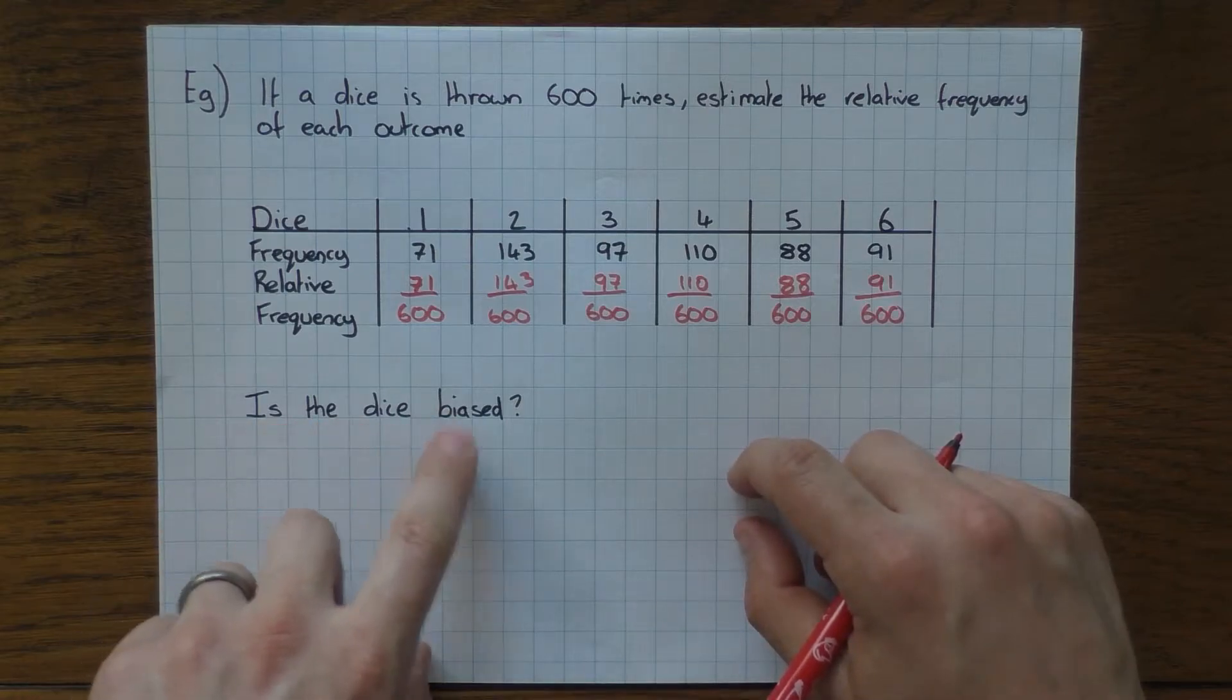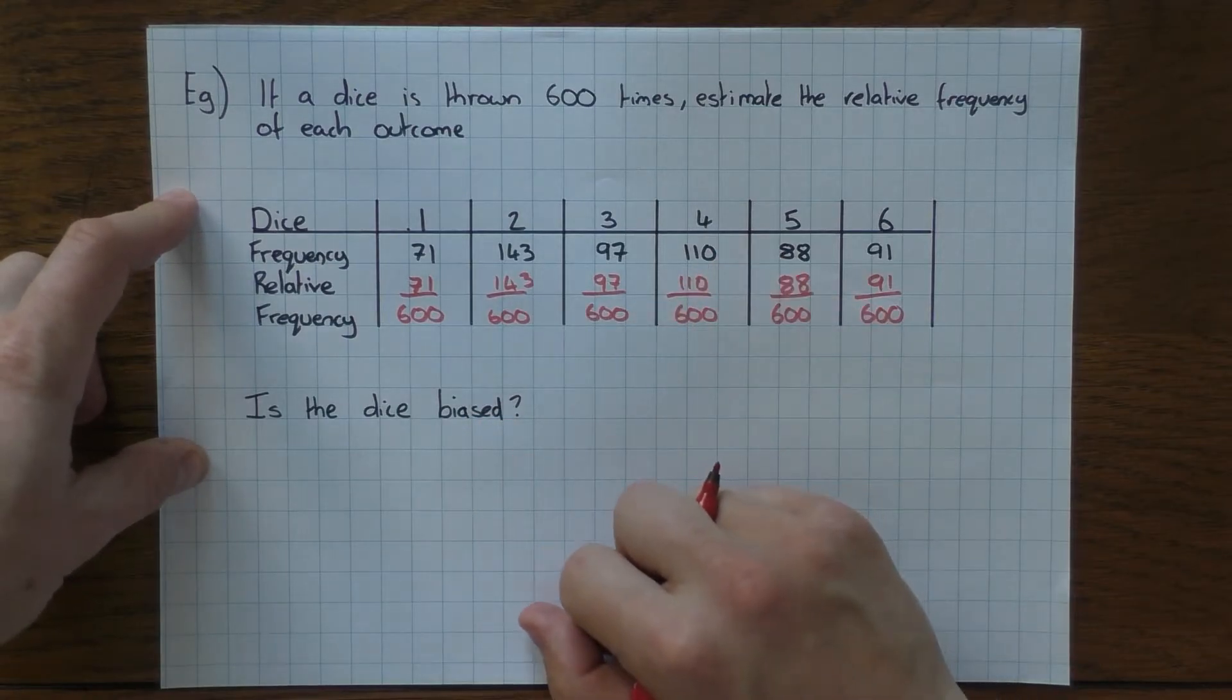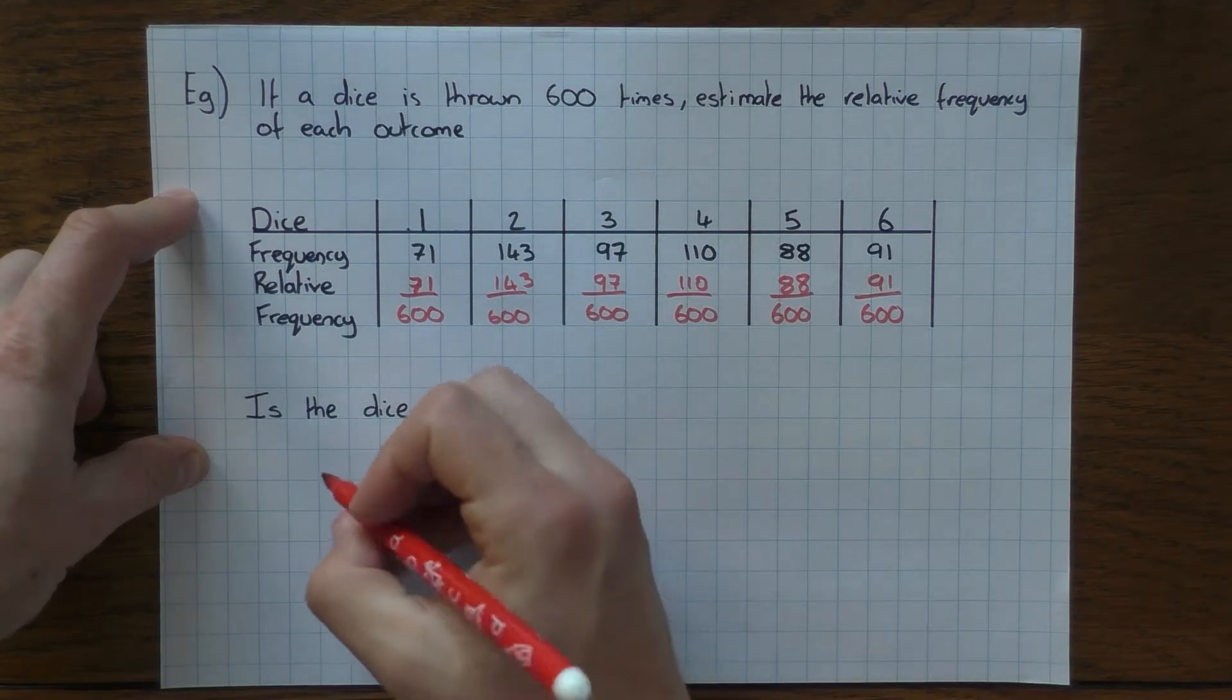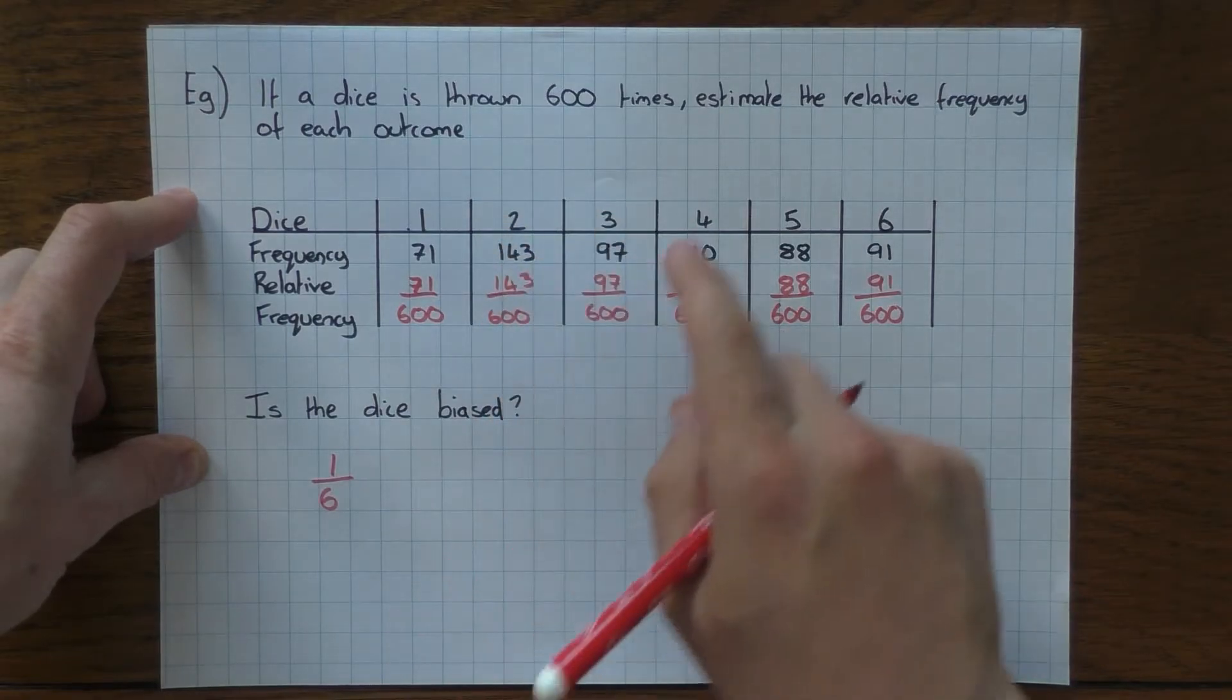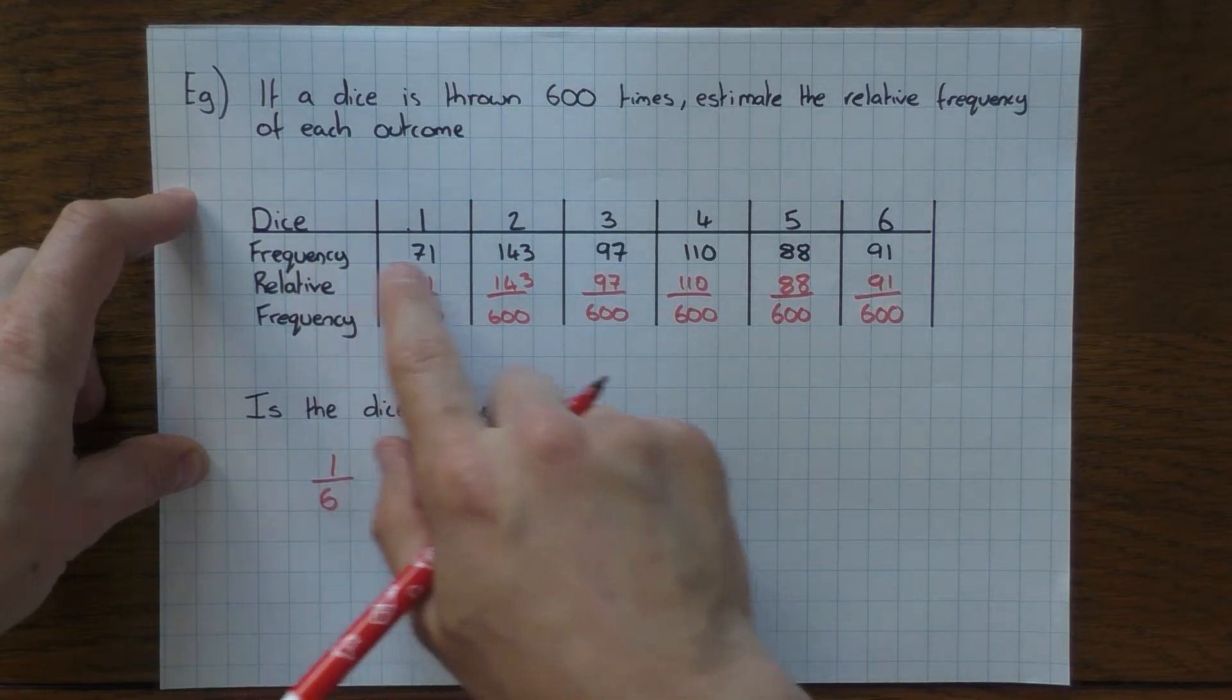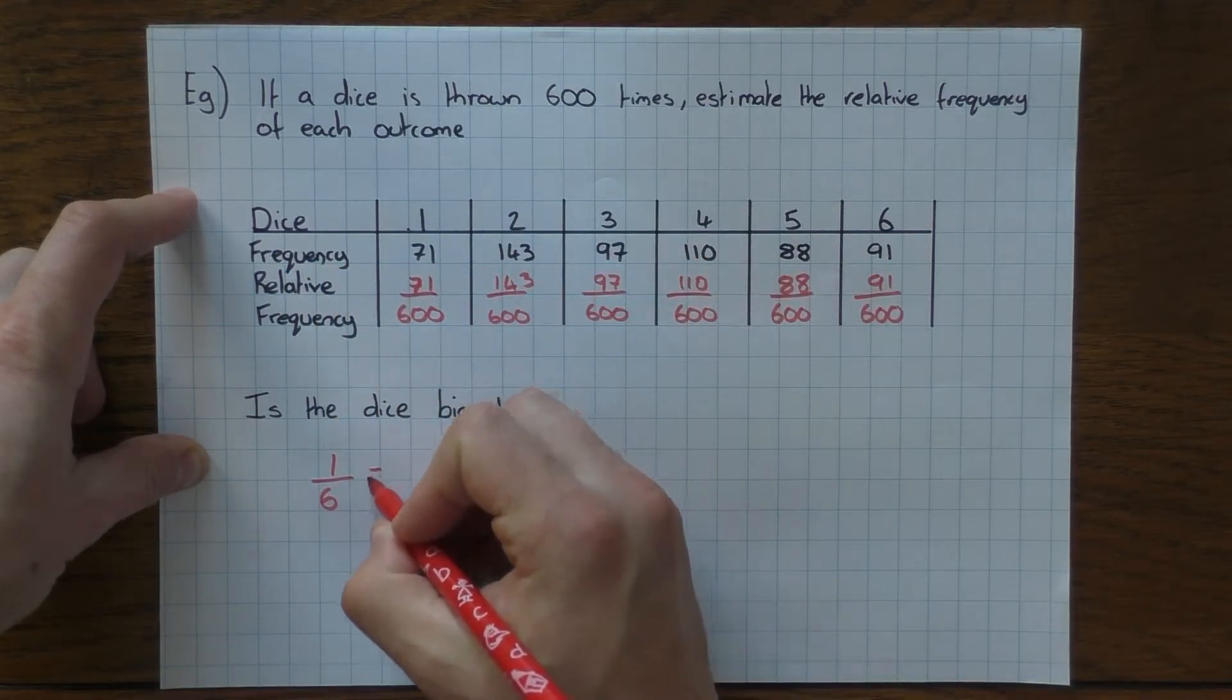It says, is the dice then biased? So again, bias means that it's unfair. Well, let's assume the dice is fair. What would be the probability of rolling a 1? Well, it would be 1 out of 6. That would be the probability of getting a 2, a 3, a 4, a 5, and a 6. That's what we'd expect. But this experiment was done and this is actually what we had. So let's compare them.